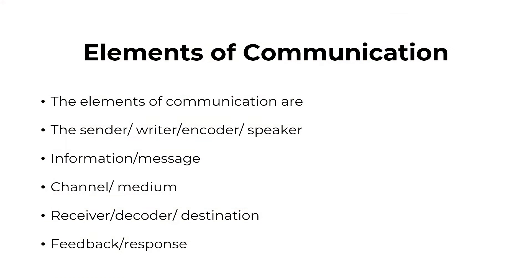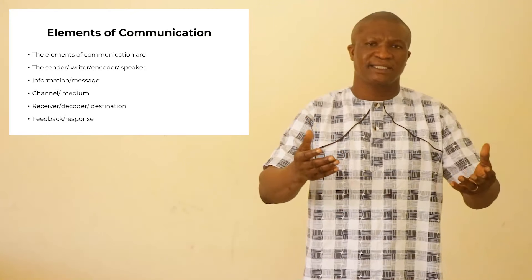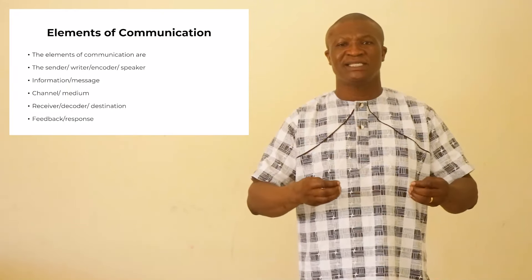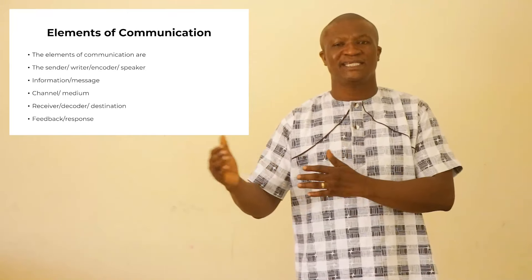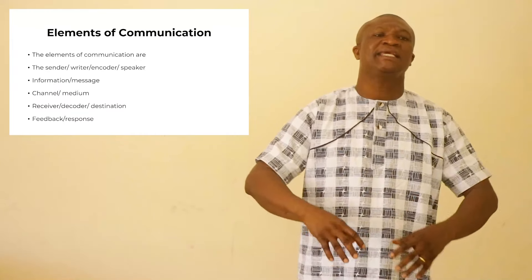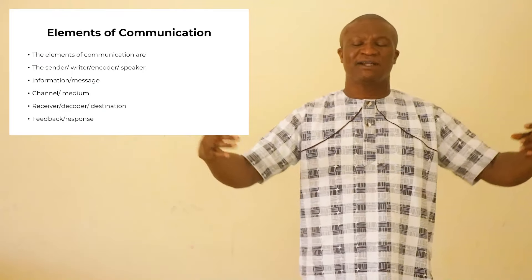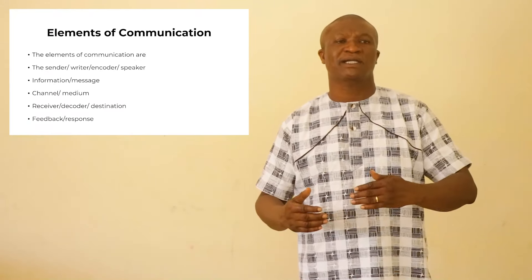So let's look at the elements of communication. The process involves these elements. The first is the sender of the information — the speaker, the person who initiates the communication process. What is sent is the information or the message. The information passes through a medium or a channel, then it gets to the destination or the receiver. For communication to be complete, the receiver gives feedback or response, which gets back to the sender.